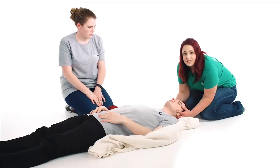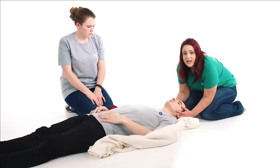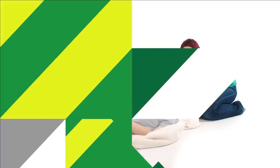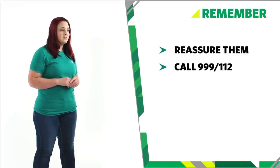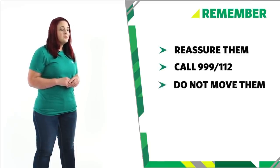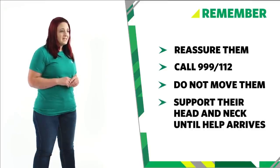Do not move the casualty from the position that you have found them in unless they are in immediate danger and it's safe for you to do so. Monitor their level of response until help arrives. If they become unresponsive at any point, prepare to treat an unresponsive casualty. Remember: if you suspect a spinal injury, reassure them and call 999 or 112. Don't move them — support their head and neck until help arrives. And that's how you help someone with a spinal injury.